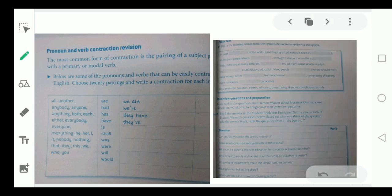Pronoun and verb contraction, revision. The most common form of contraction is the pairing of a subject pronoun with a primary or modal verb. Here given some of the pronouns and verbs that can be easily contracted, like you can see here, written, we are in a proper form. And in contraction, we are going to write it as you can see here.